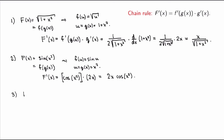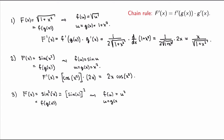Third example: sin²(x). Note that this is not the same as sin(x²). Here you take the sine first and then square it, so the outer function is the square and the inner function is sine. Using the chain rule: the derivative of the outer function gives 2 · sin(x), times the derivative of the inner function cos(x), giving 2 sin(x) cos(x) — a completely different answer from the previous case.